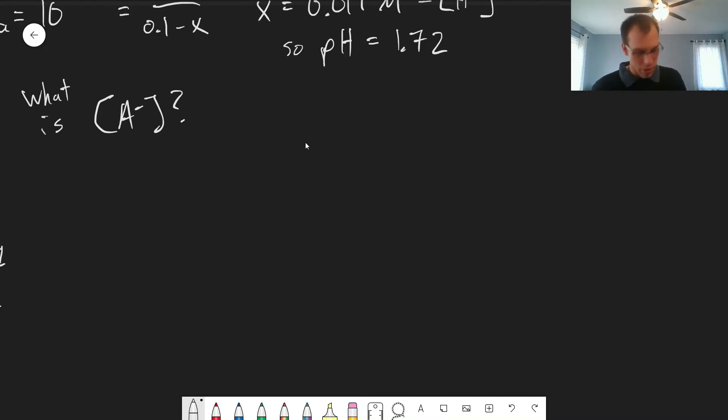All right, so we use KA2, which remember would be concentration of H plus, concentration of A minus, divided by concentration of HA.